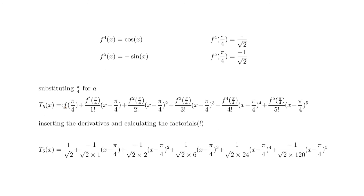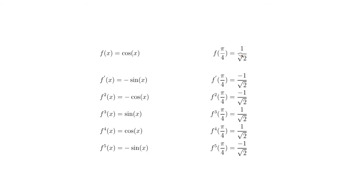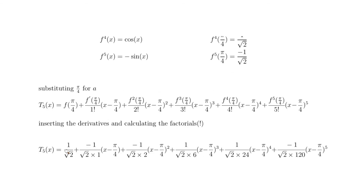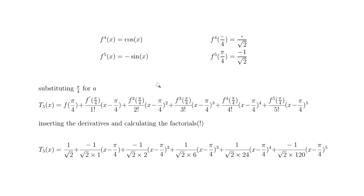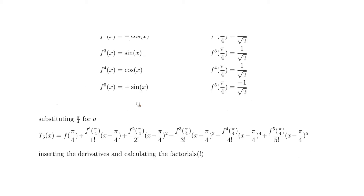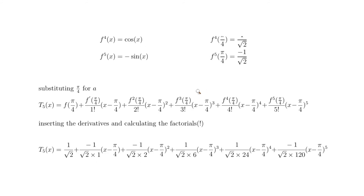Now substituting: f(π/4) = 1/√2, so the first term is 1/√2. The first derivative at π/4 was −1/√2, so that term becomes (−1/√2) divided by 1, times (x − π/4). The second derivative at π/4 was also −1/√2, giving (−1/√2) divided by 2, times (x − π/4)².